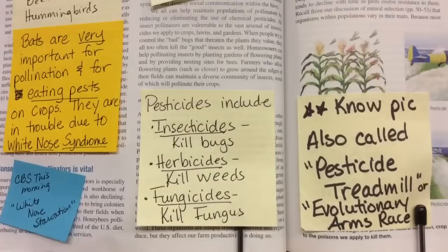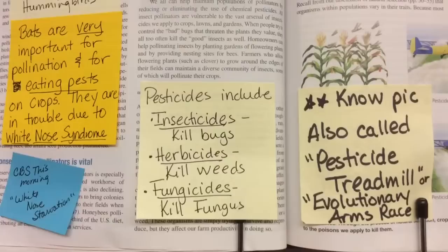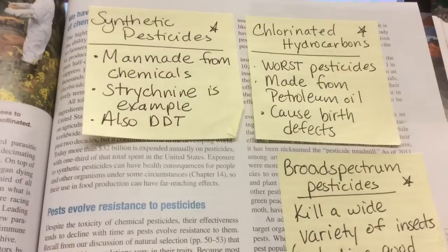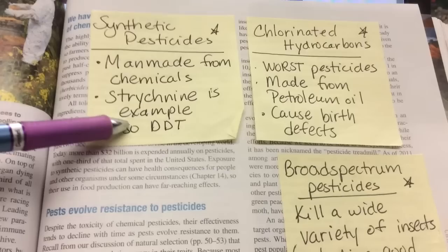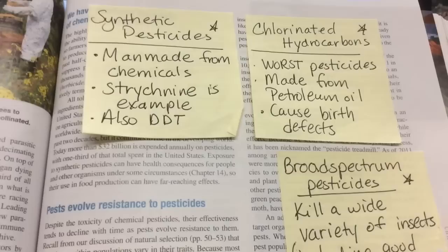We have different kinds of pesticides. A pest is anything unwanted, which can include an insect, a weed, or a fungus — for example, strawberries and berries are sprayed with a lot of fungicide to kill fungus. A synthetic pesticide is man-made from chemicals; examples include strychnine and DDT. A chlorinated hydrocarbon is another category — some things can fit into multiple categories.